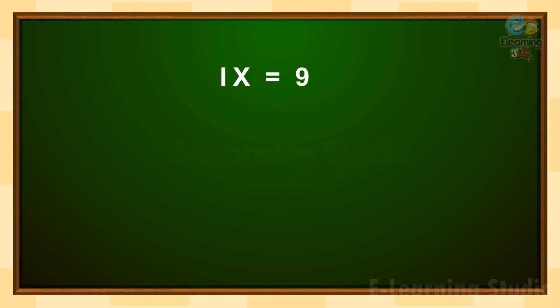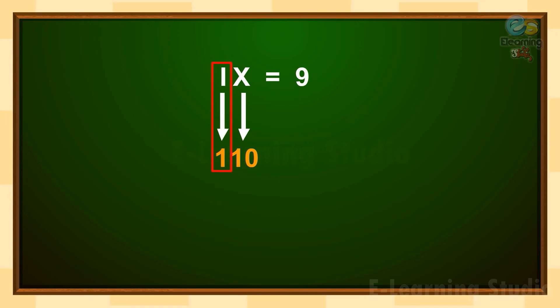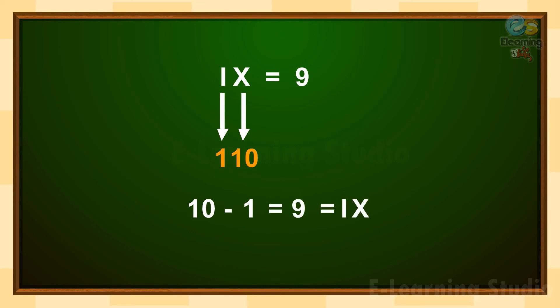Here you can see IX, which stands for the number nine. Letter I is for one and letter X is for ten. According to our rule, letter I, which is one, is smaller and is on the left side of letter X, which is ten. Ten is the larger number and one is smaller. We subtract both and we get nine. In Roman numbers, this is IX.